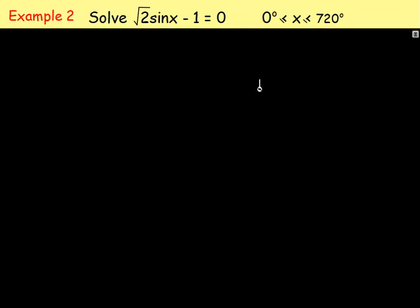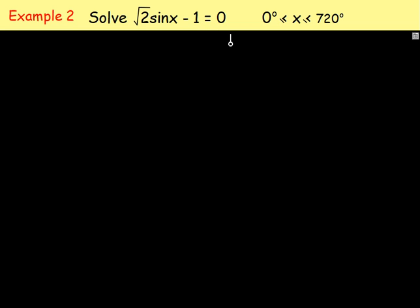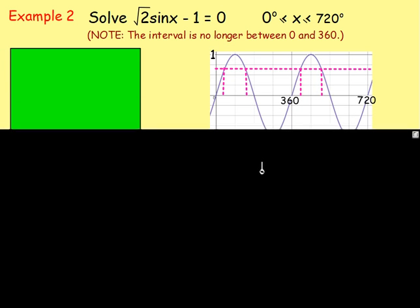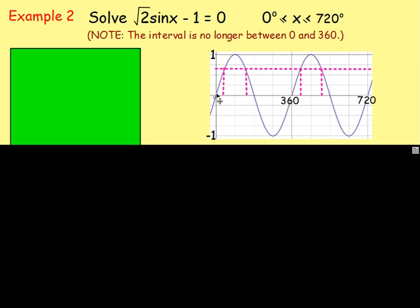Example number 2: solve root 2 times sin(x) minus 1 equals 0, and x is in degrees this time, between 0 and 720. What you should be noticing is that the interval is no longer between 0 and 360 — all the ones you were solving in National 5 were between 0 and 360, but this time we are changing the interval. Because it's a periodic graph, it just repeats every 360 degrees, so if you're looking for all values between 0 and 720 you'll find more solutions.